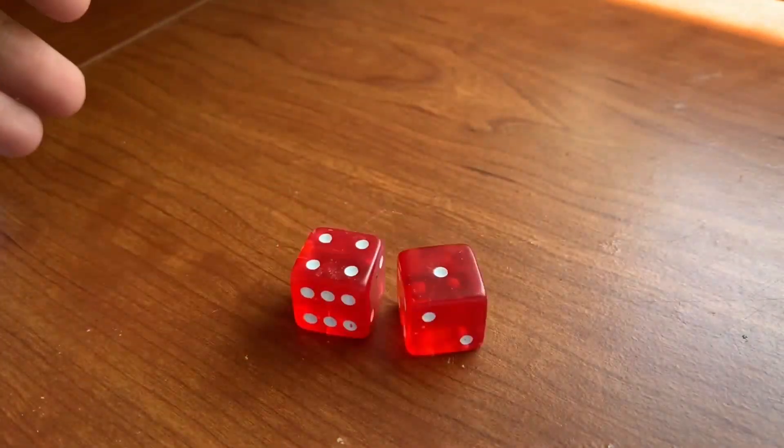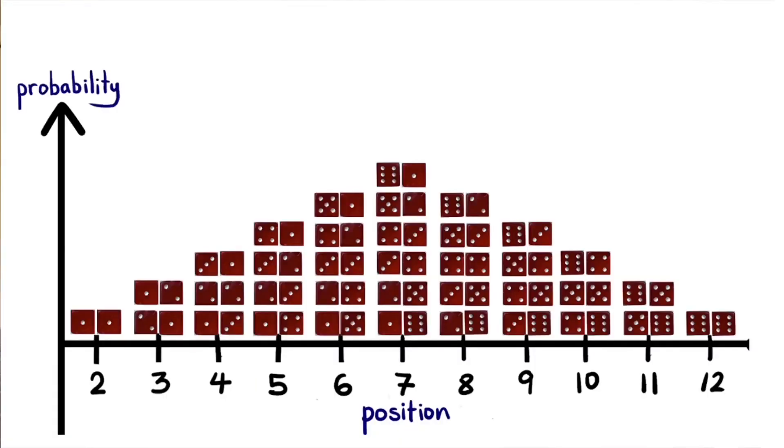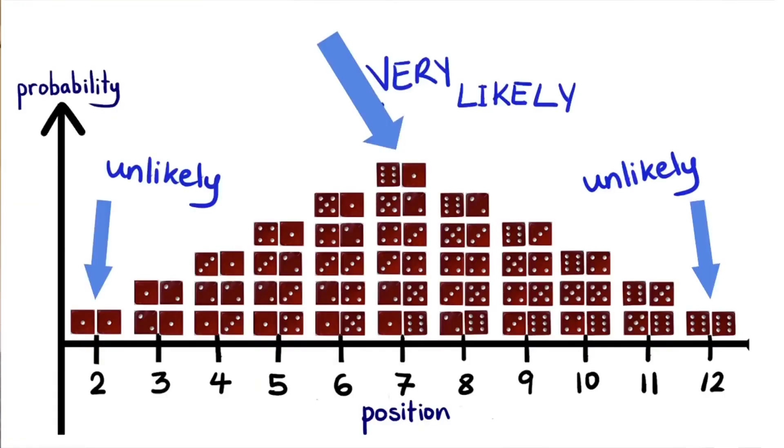So as our electron is shaking the dice, it's everywhere at once. Something, like us trying to measure its position, has to force the electron to let go of the dice and pick a spot. Of all combinations, getting a seven is more likely than two or twelve.